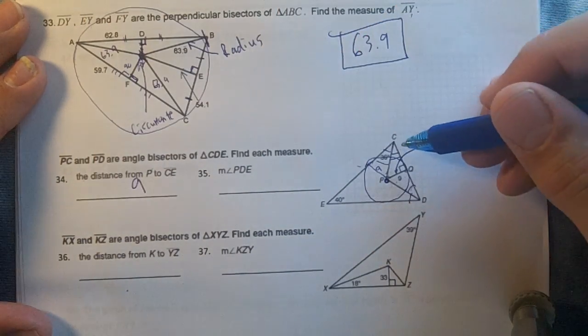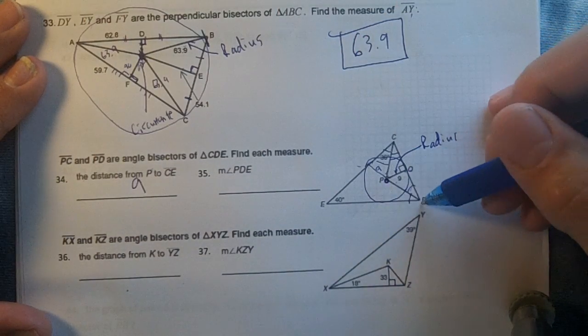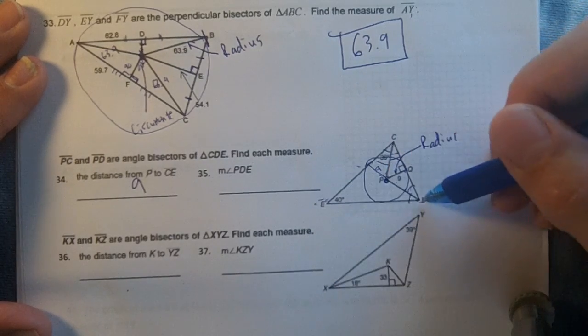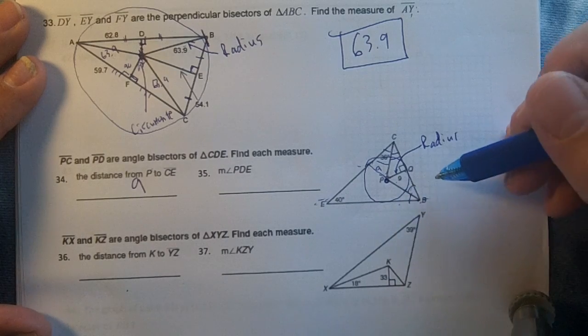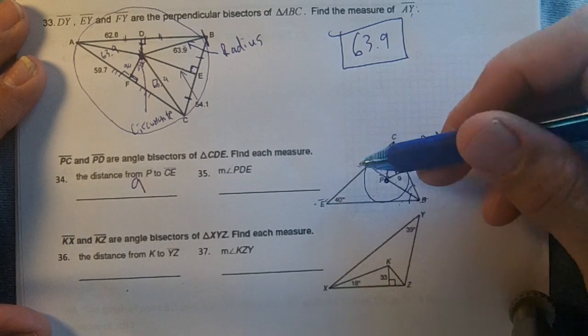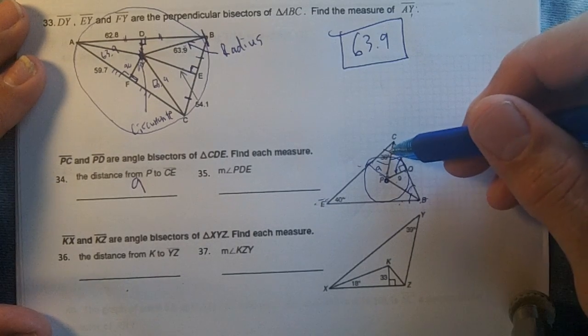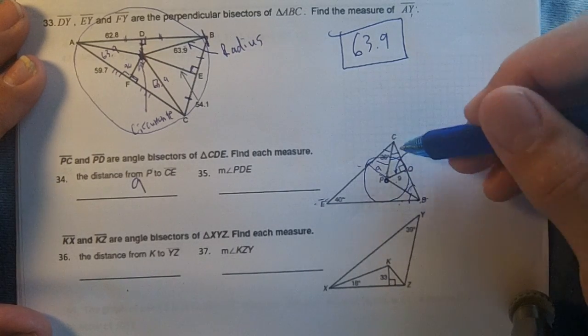The measure of PDE. PDE right here, this angle is bisected. This is 40, this is 36. 36 and 36.